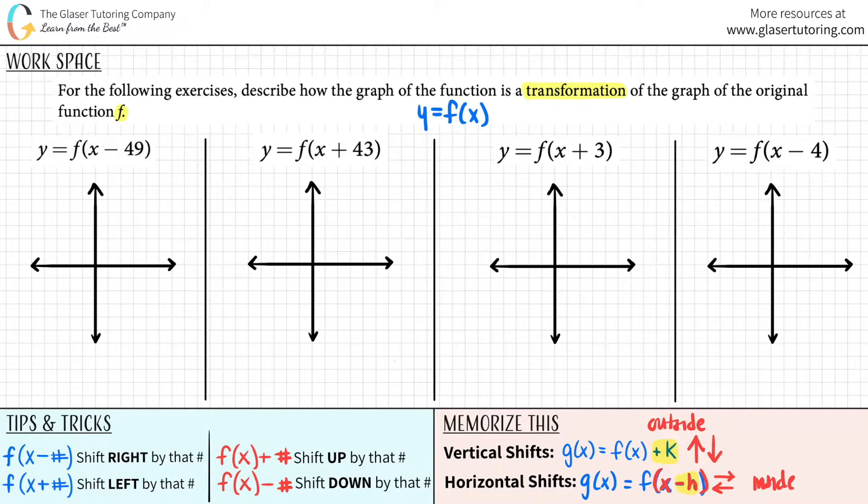So let's give it a shot. For this one, it looks like we had f of x, but now it's minus 49. What kind of shift is this? Is this inside the function or is this outside? This is inside because I have this minus 49 inside the brackets. An inside shift is one of these. It's a horizontal shift.